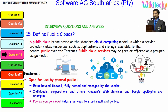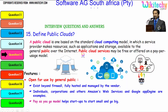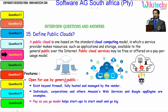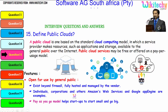Moving towards the public cloud definition: a public cloud is one based on the standard cloud computing model in which a service provider makes resources such as applications and storage available to the general public over the internet. Public cloud services may be free or offered on a pay-per-usage model. Features of public cloud include: it is open for use by the general public, it exists beyond the firewall, it is fully hosted and managed by the provider. Individuals, corporations and web services such as Google App Engine are typical examples.